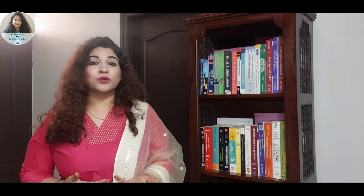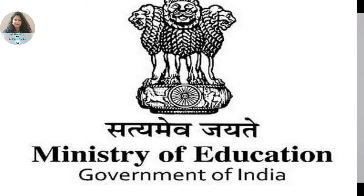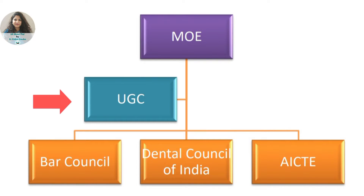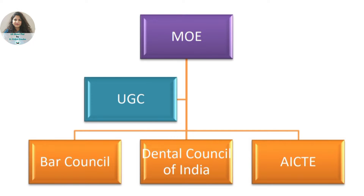The education which we take after our class 12 comes under the higher education industry, which also includes your FPM and PhD. The Ministry of Education is the apex body of the higher education industry, under which comes the UGC, or University Grants Commission, which is responsible to regulate all the universities and their affiliated colleges. If a university is not recognized by UGC, it will be considered as a fake university. Supporting UGC, we have many statutory councils, for example your Bar Council, your Pharmacy Council of India, or your Dental Council of India.